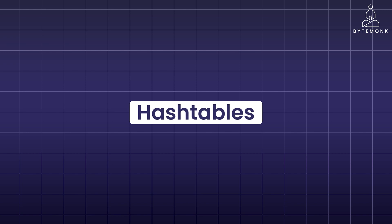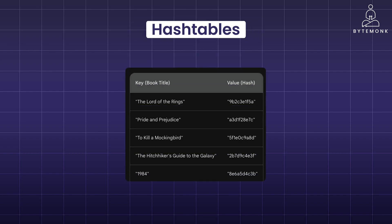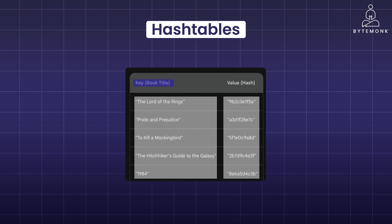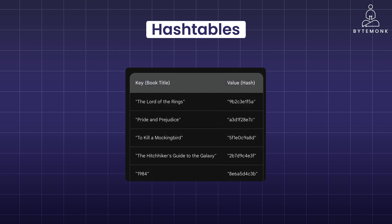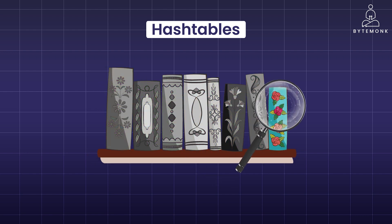Remember that giant library with millions of books? Finding a specific book would be a nightmare. That's where a special system called a hash table comes in. A hash table is like a super organized library assistant — it takes a book's title, like your username, and creates a unique code, a secret nickname for that book. This code is called a hash. It's like a shortcut to find the book much faster. The hash table stores the book along with its hash, and whenever you want to find it, the hash table uses the hash like a secret key to locate it in a flash.